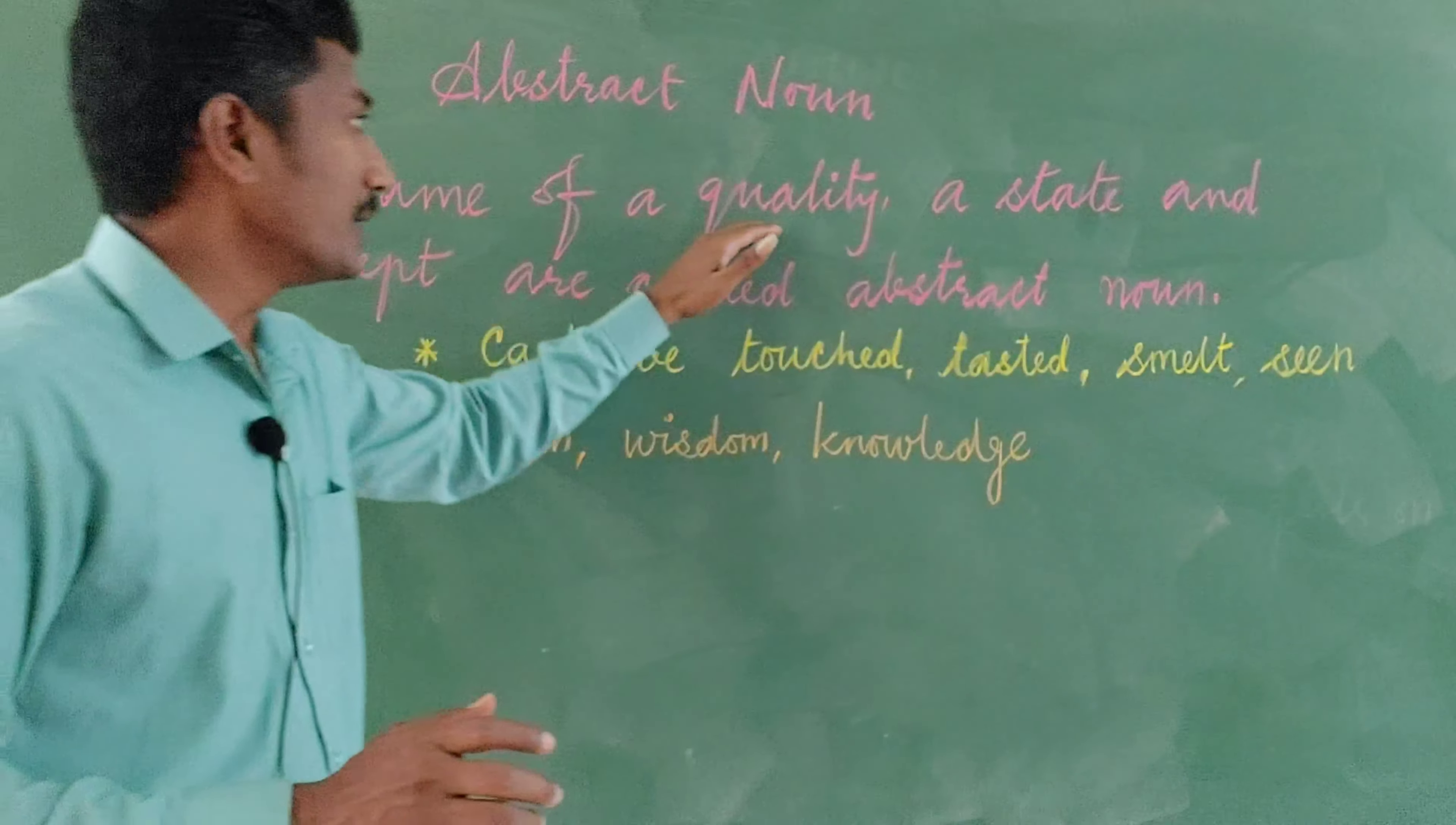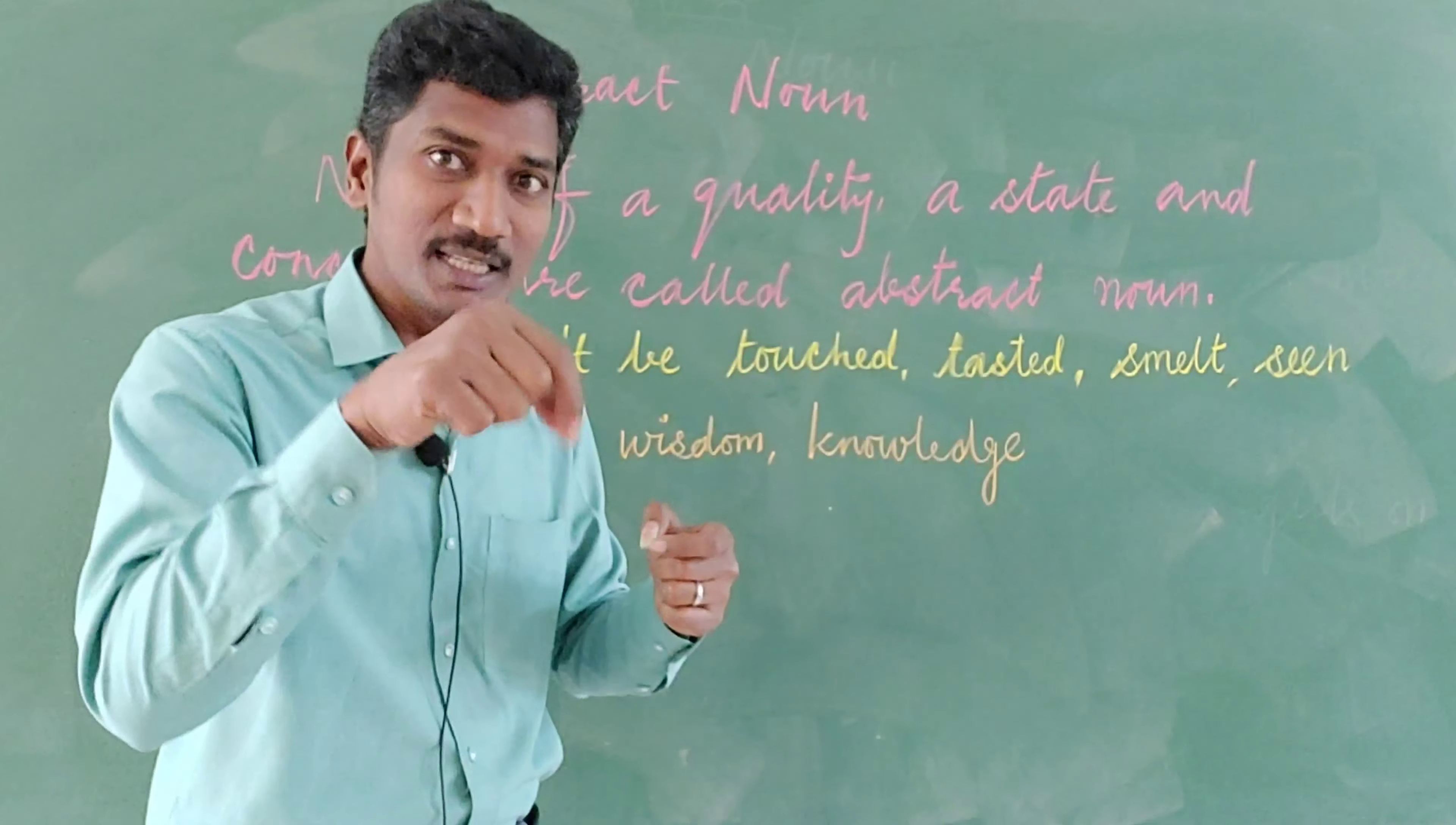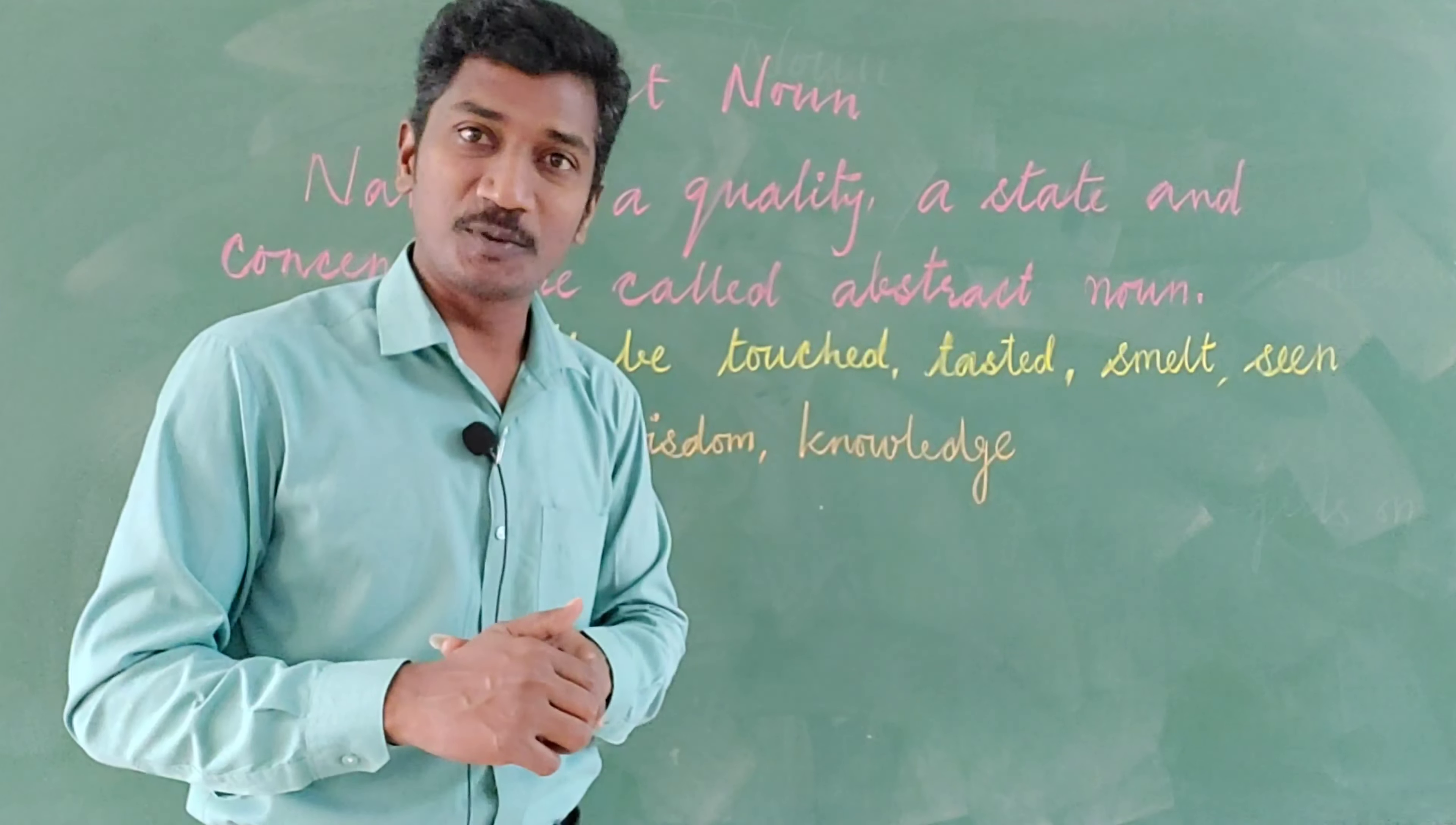See once again: name of a quality. We say it is good. When you say it is good, good cannot be seen. We say size - we can see that, but we cannot see what is size. So quality, state, and concept are called abstract noun. Very simply, cannot be touched, tasted, smelt, and seen are called abstract noun.